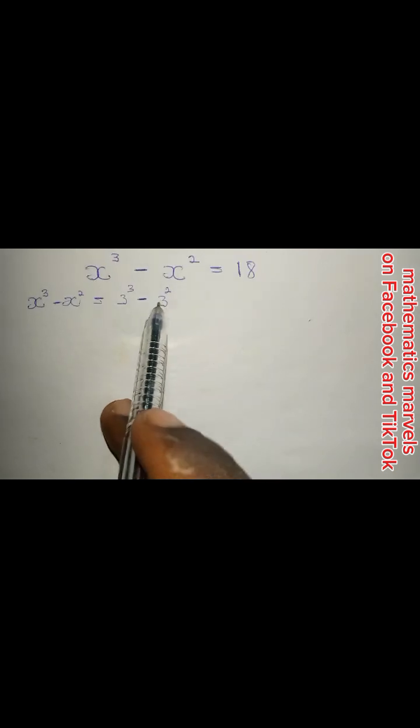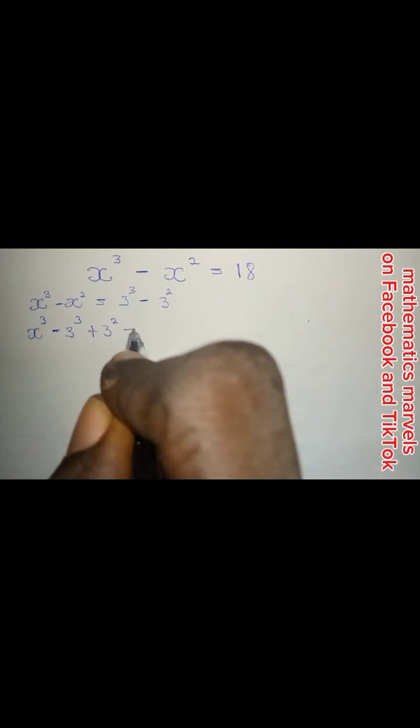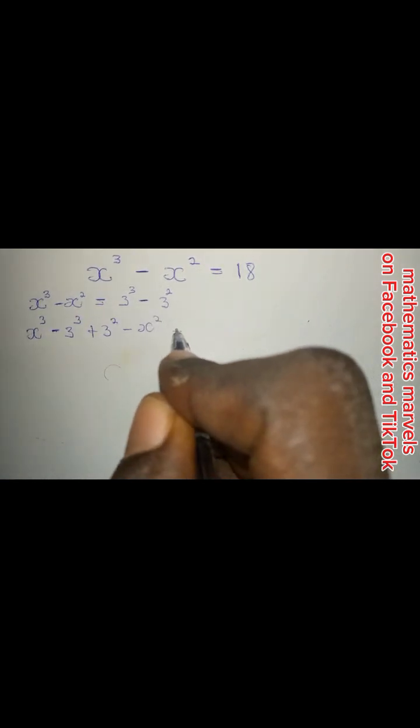So let's bring this to the left hand side. We have x raised to the power of 3 minus 3 raised to the power of 3, plus 3 raised to the power of 2 minus x raised to the power of 2 is equal to 0. So now we can see that these are similar terms, so we will group them together and set it equal to 0.